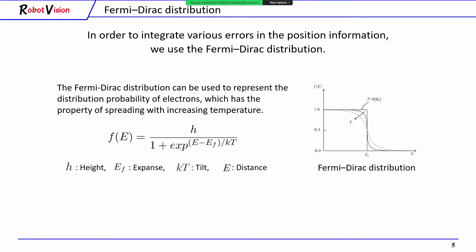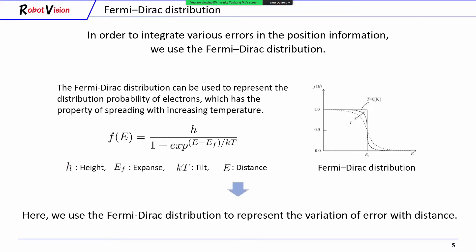Generally, the Fermi-Dirac distribution can be used to represent the distribution probability of electrons, which has the property of spreading with increasing temperature. Here, we use the Fermi-Dirac distribution to represent the variation of error with distance.